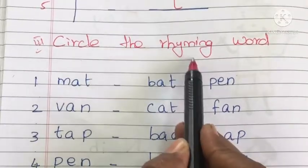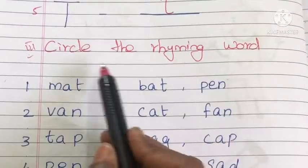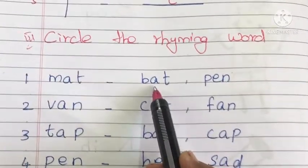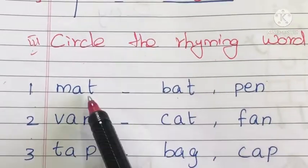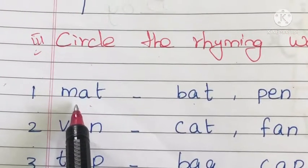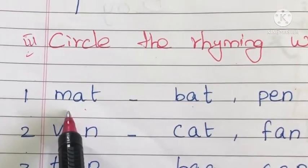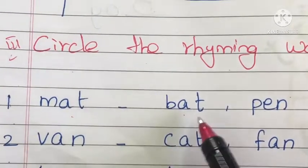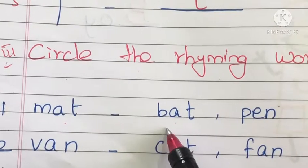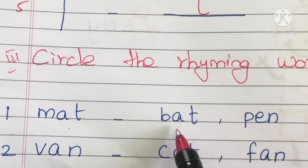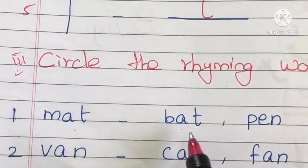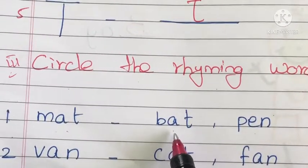Circle the rhyming words. Here a word is given and we have to identify the rhyming word for it. The first word is mat. What is the rhyming word for mat? The choices are bat and pen. The rhyming word for mat is bat. Circle it.